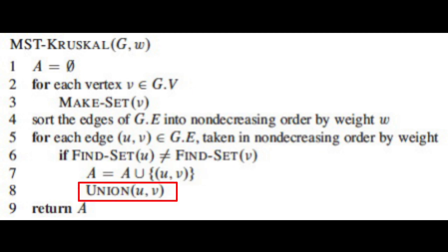And finally, in line number 8, a union function is used to combine the set of vertex u and the set of vertex v to indicate that they are connected. And finally, the algorithm returns the set A, which now contains the minimum cost spanning tree.